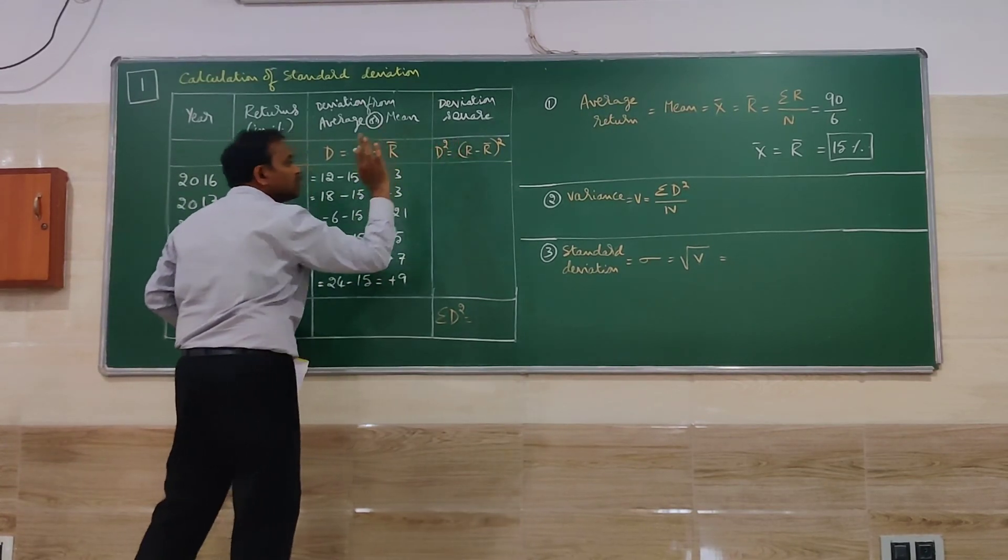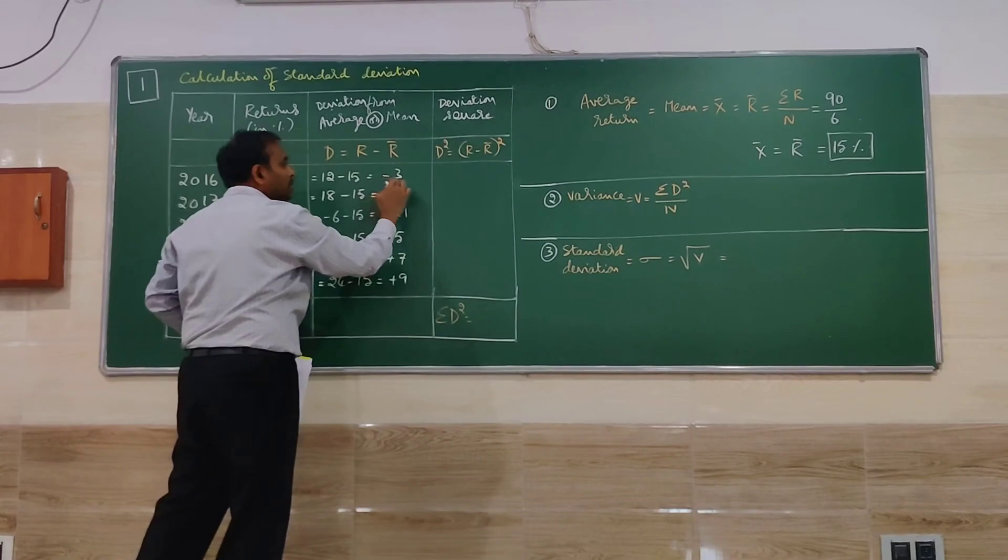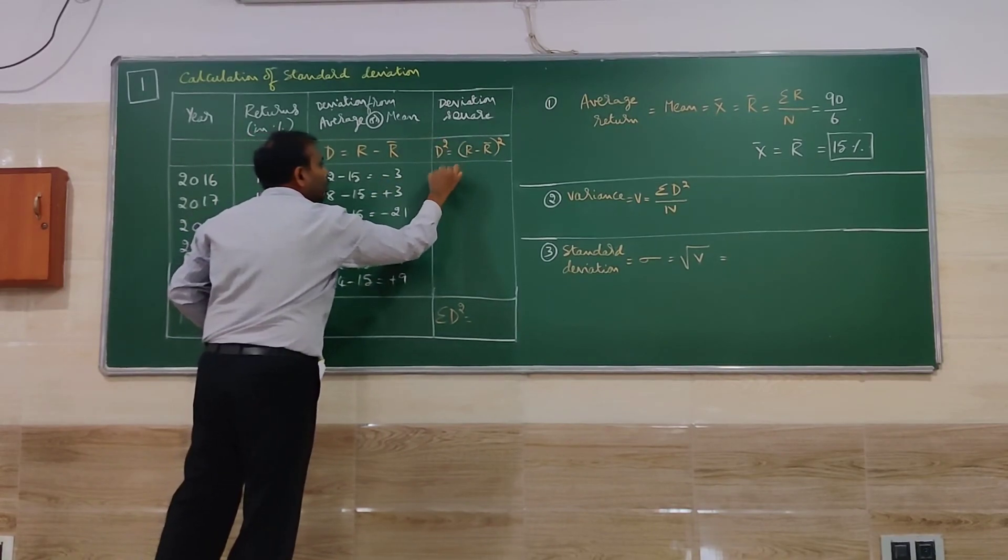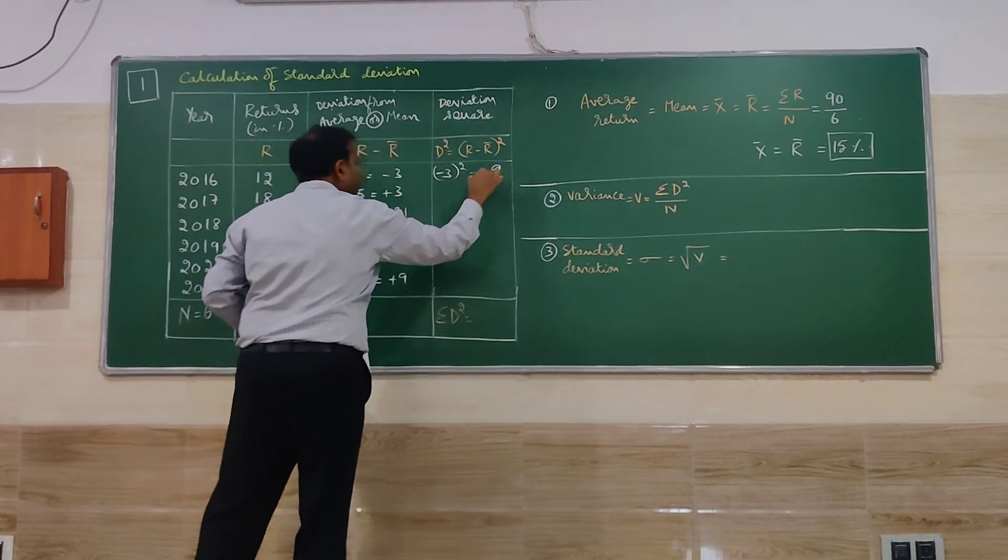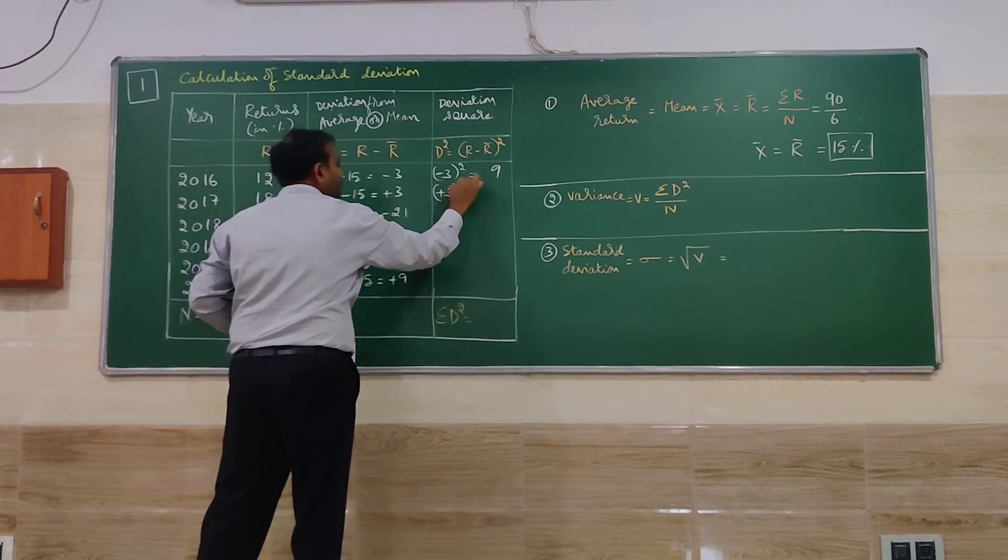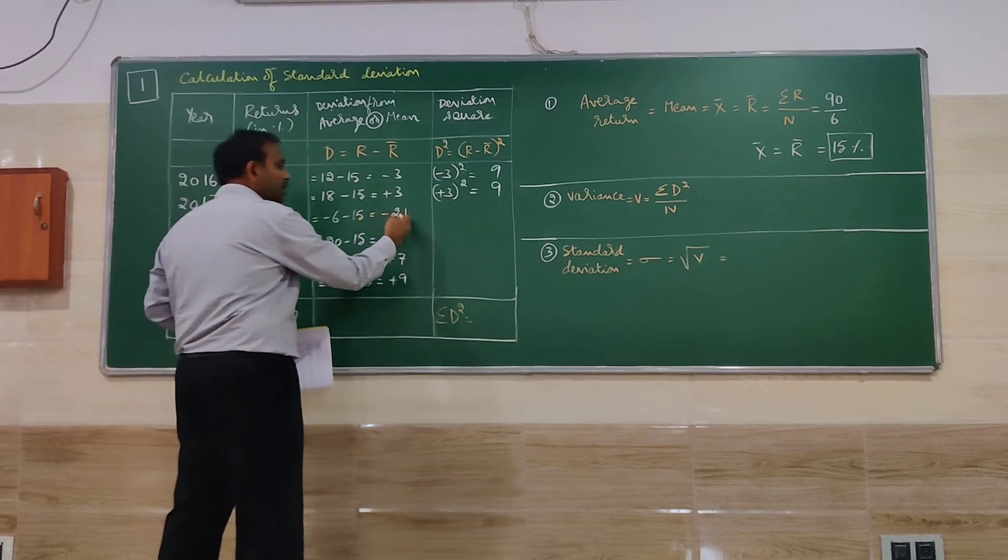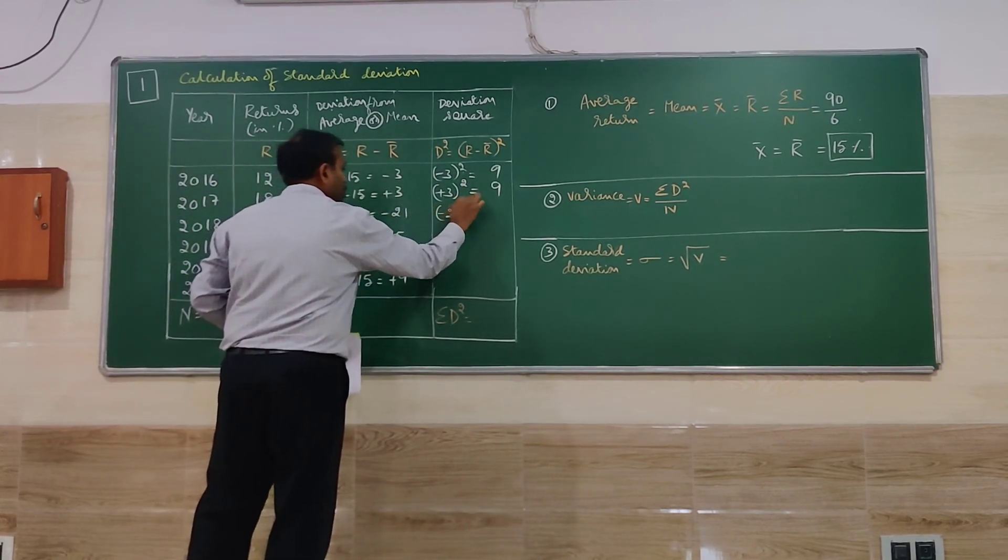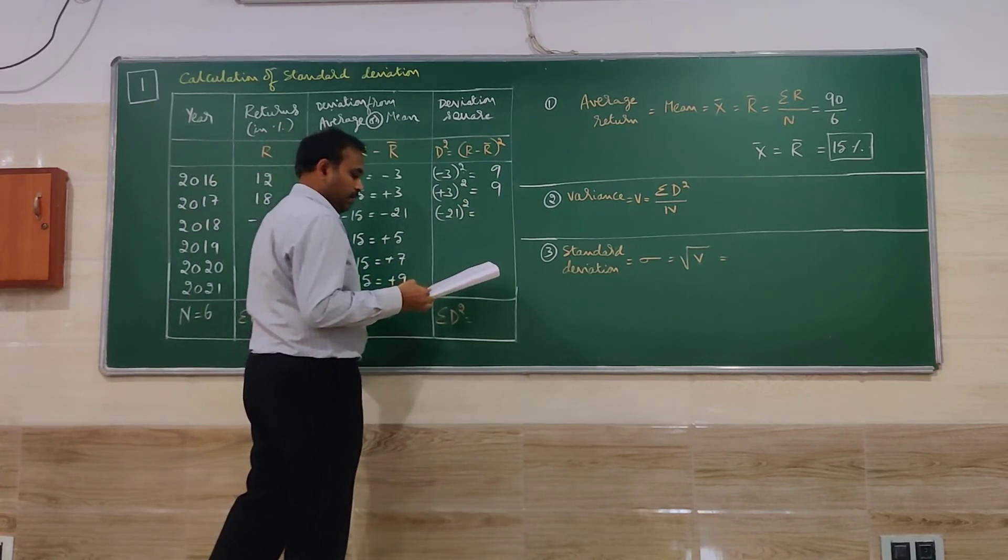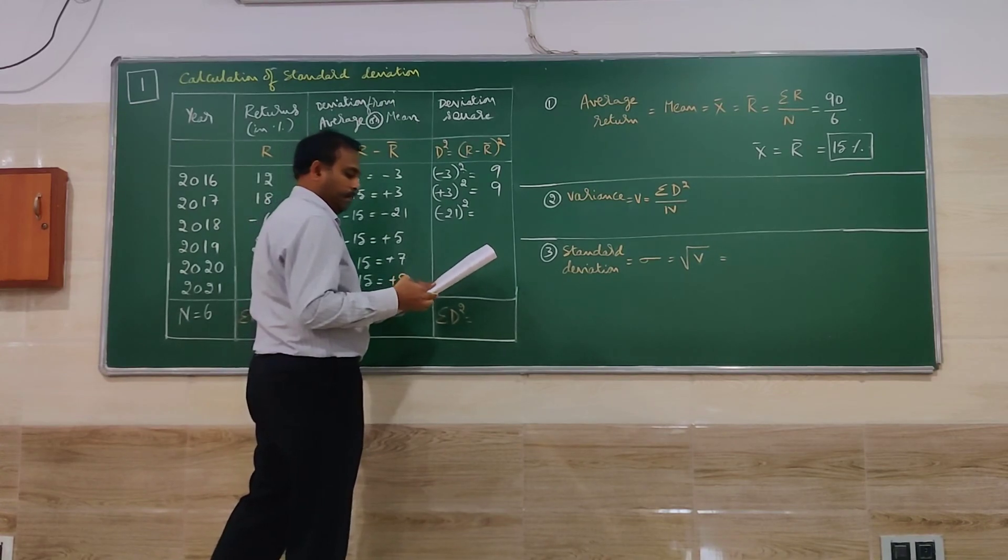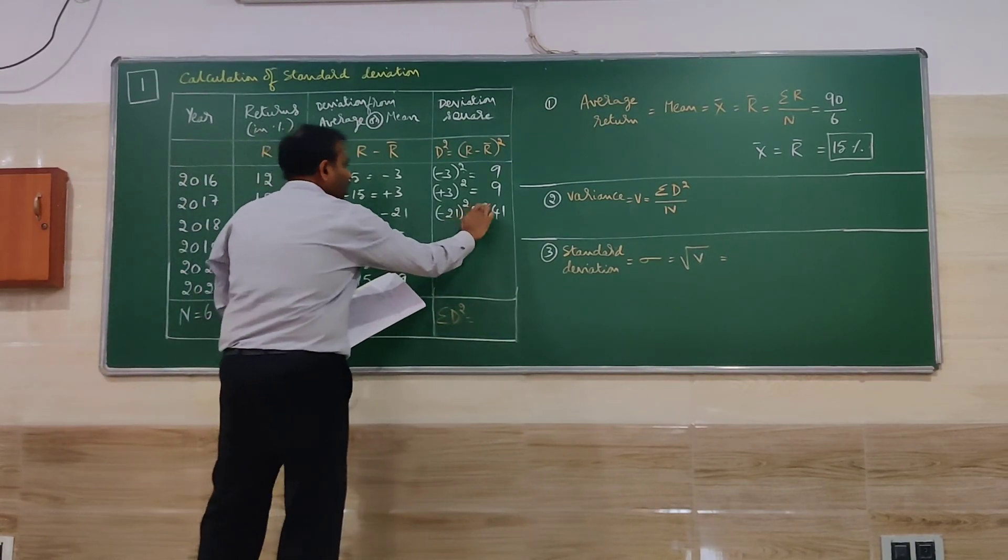Then we have to go for D square. D square is whatever the value you have got here as D, that has to be squared. So minus 3 whole square. So minus 3 into minus 3. That is going to be 9. Similarly plus 3 whole square. So 3 into 3 is 9. Like that, minus 21 square you have to do. That is going to be 441.